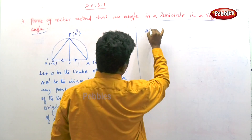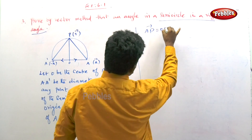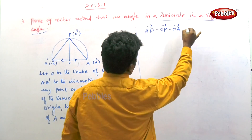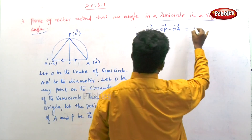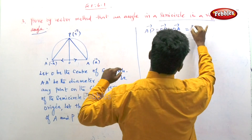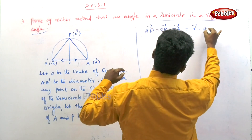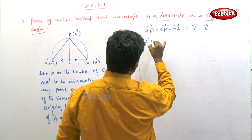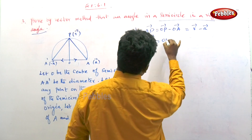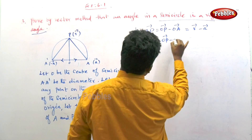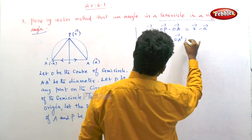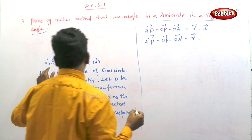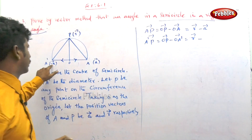Vector AP can be written as vector OP minus vector OA, which equals r vector minus a vector. Similarly, vector A'P equals vector OP minus vector OA', which equals r vector minus (minus a vector).